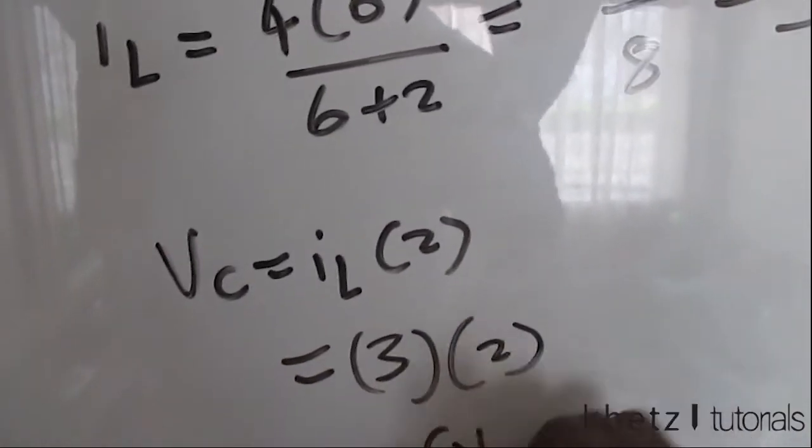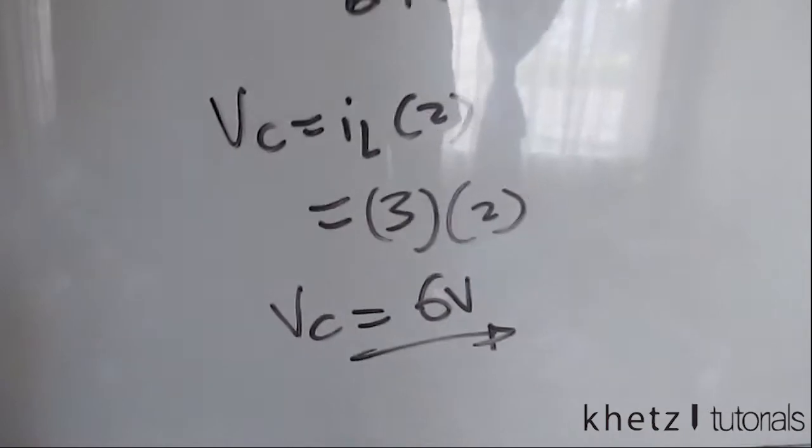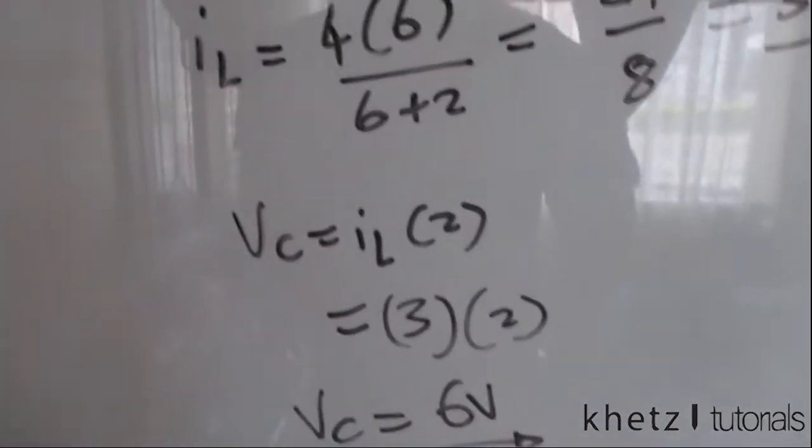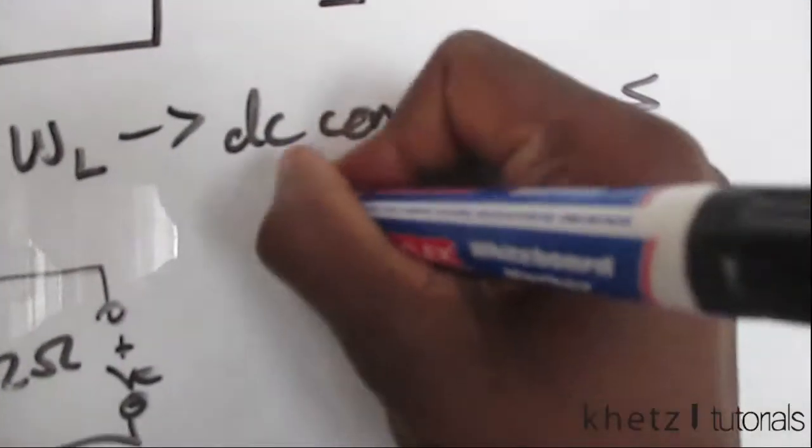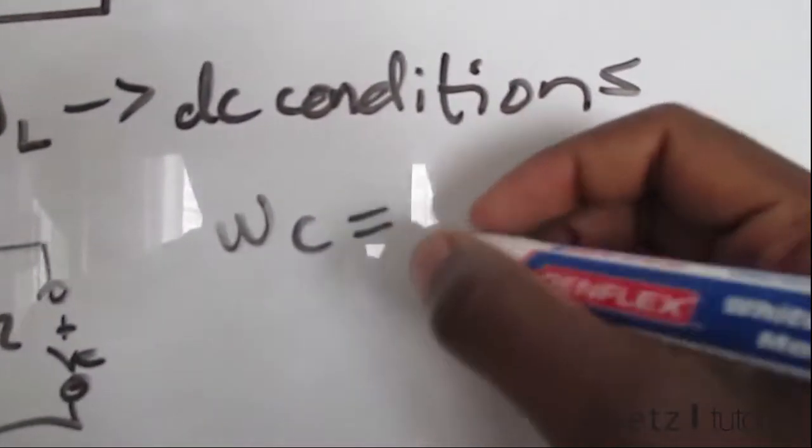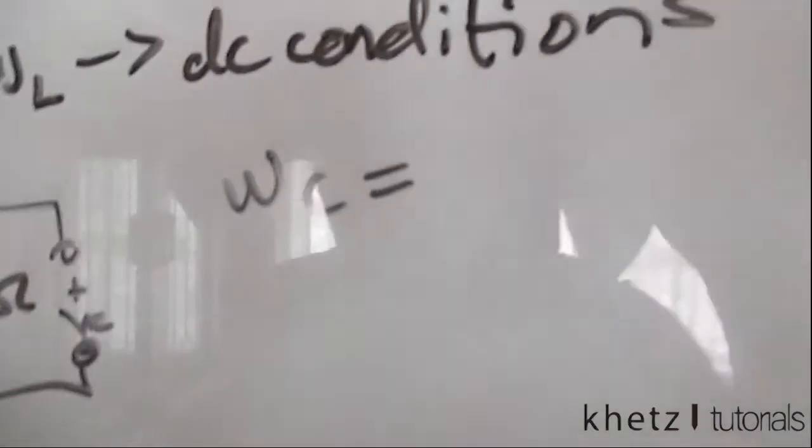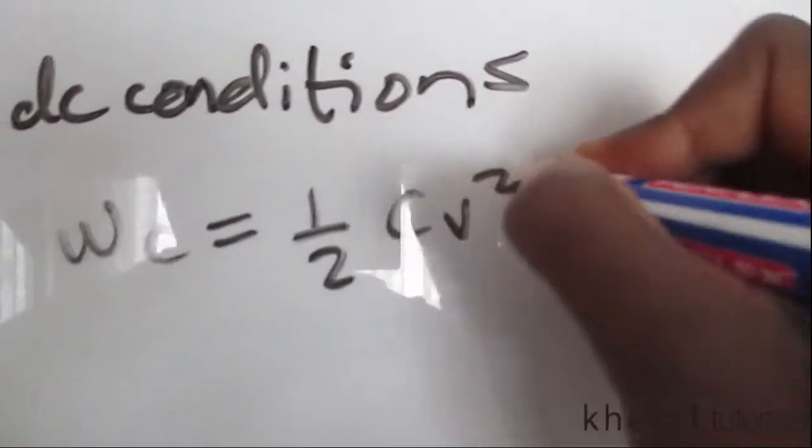So we are now done with two parts of this question, and we now move on to find the energies. For the energies, you just basically have to substitute into these formulas: half CV squared and WL is half LI squared.